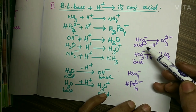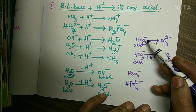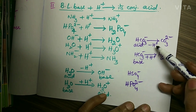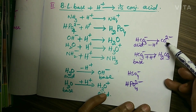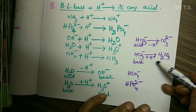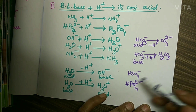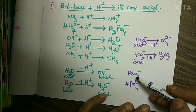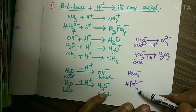Similarly, HCO3⁻ can act as both acid and base. By losing a proton it forms the carbonate ion CO3²⁻, and by gaining a proton it forms carbonic acid H2CO3. Similarly, bisulfate ion and phosphate ions can also act as both Bronsted-Lowry acids and bases.